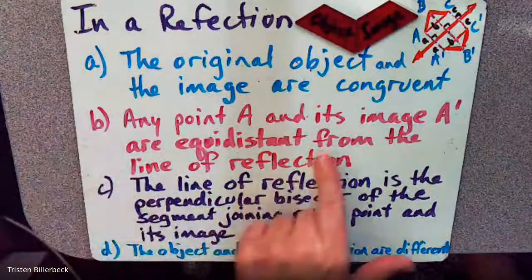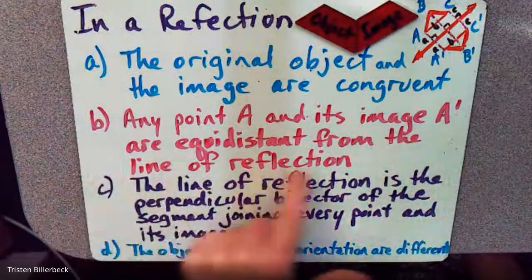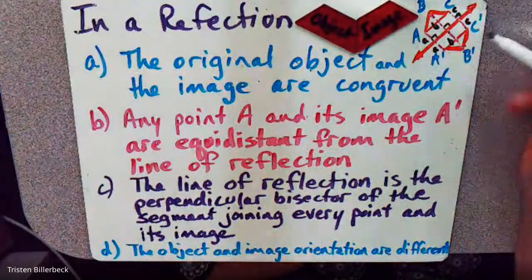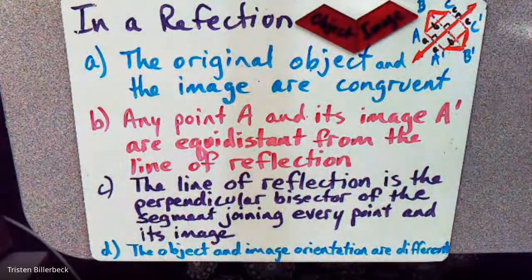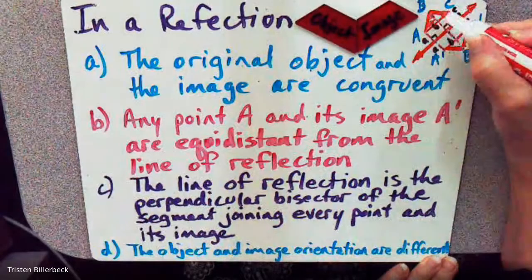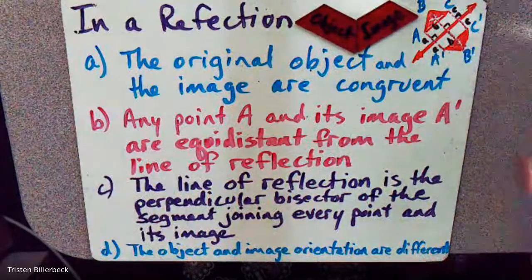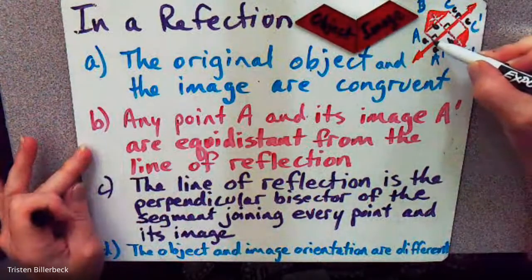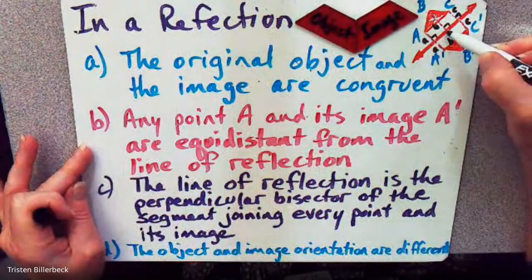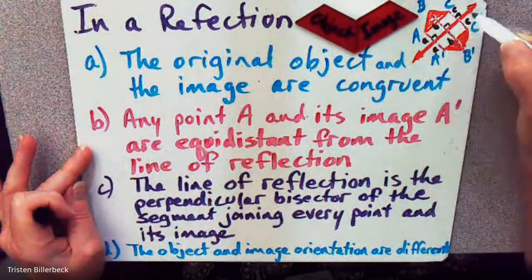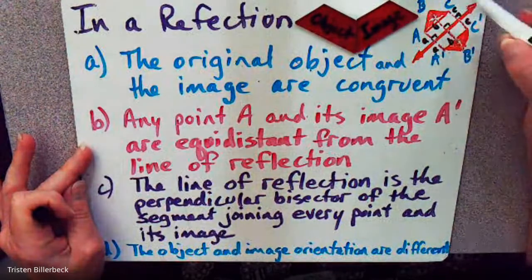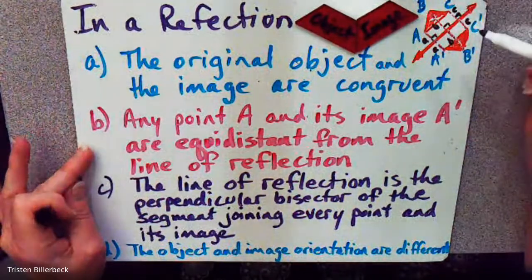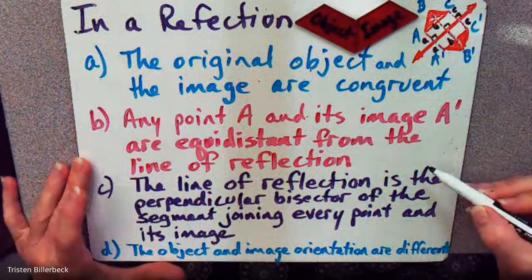Any point A and its image A prime are equidistant from the line of reflection. So if I have this line of reflection with two triangles, they're equidistant. Point B is distance B from the line of reflection, and its image is also distance B from the line of reflection. C is distance C from the line of reflection, and so is C prime. So we have equidistance from the line of reflection.